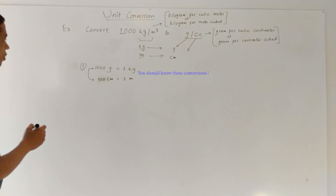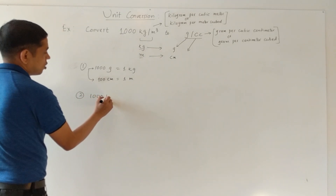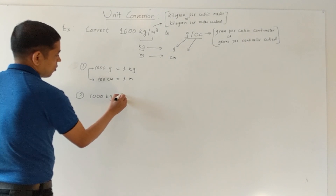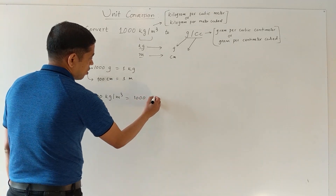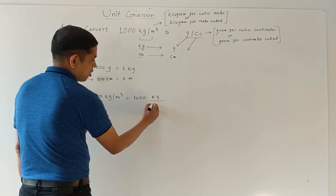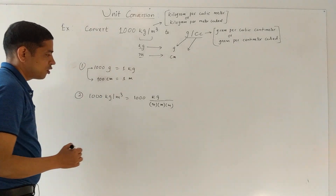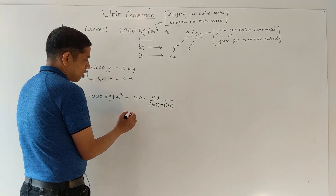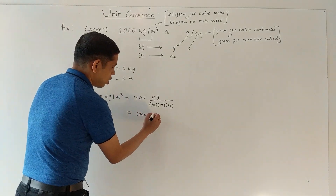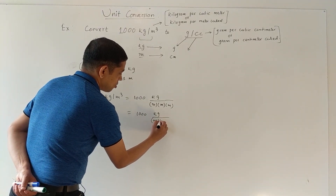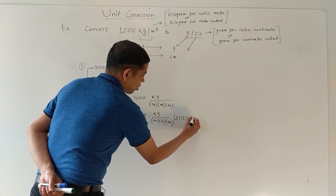We have to use this conversion here. Our problem is 1000 kilogram per meter cube. Let's expand this: 1000 kilogram on the top, then you have meter times meter times meter. Now I'll write this as 1000 kilogram over meter times meter times meter, times 1 times 1 times 1 times 1.